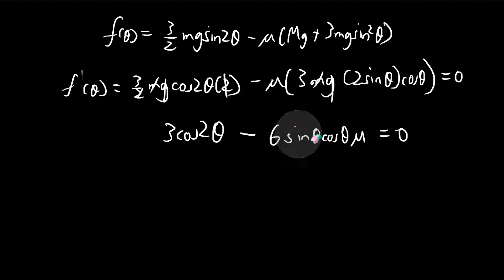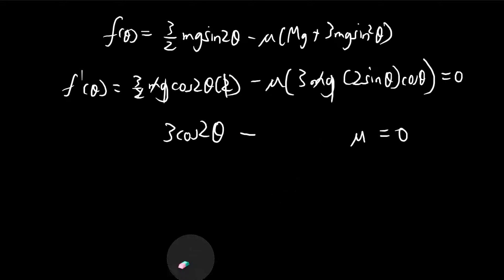And then once again, I'm just going to use the double angle formula again. So instead of 6, it becomes 3 sine 2 theta. So 3's, they cancel out again. So you see that?